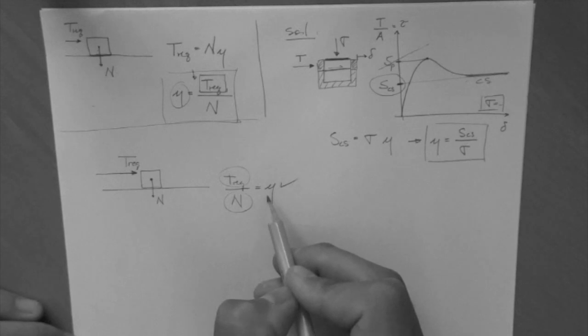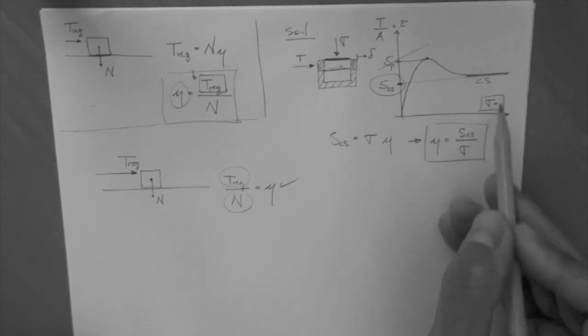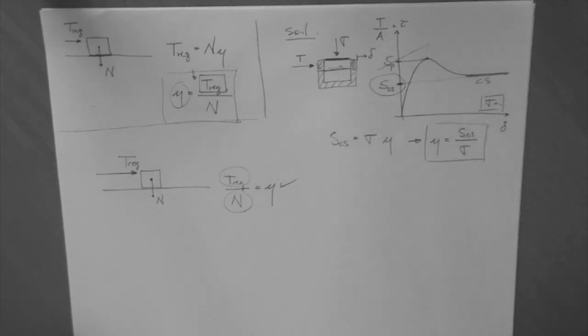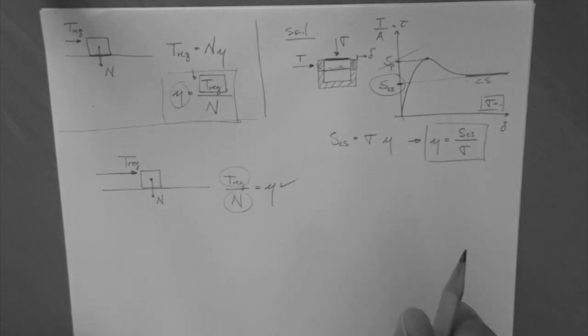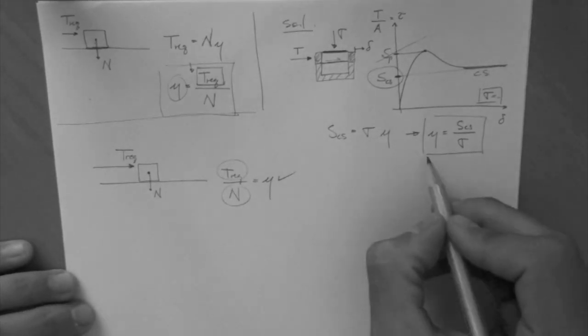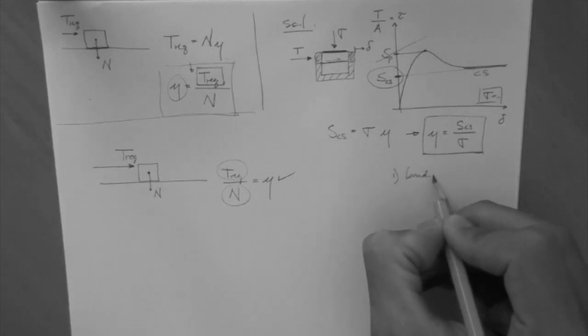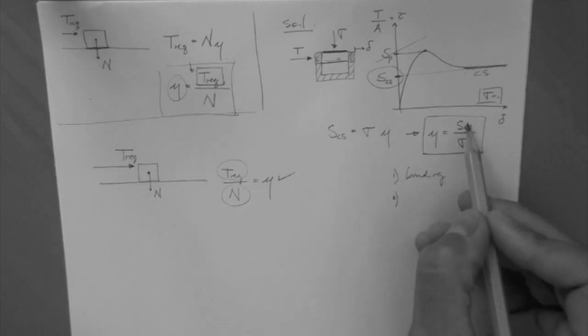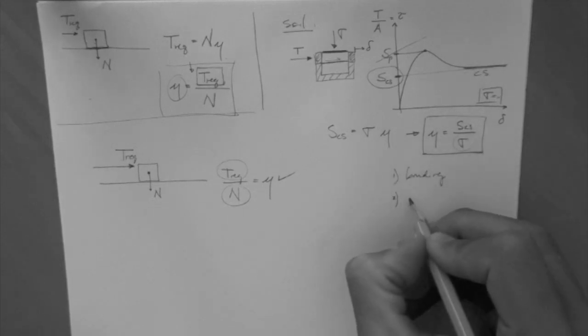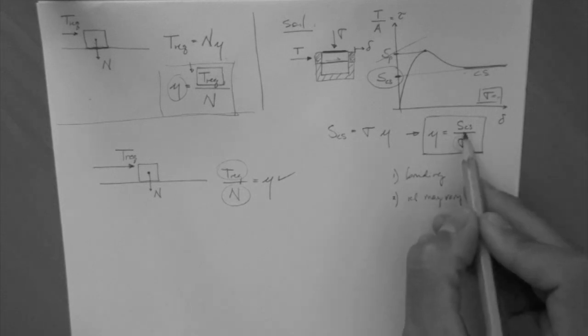So if you were looking for the relationship, you would do this experiment. Here, if you're looking for the relationship between the strength and the normal stress, you would do this experiment. The thing is that, in this case, the case of soil, the relationship is a little bit more complex. Why? Because soil, first, may exhibit bonding between the grains, and two, the relationship may vary with this stress here. These are the two main reasons.